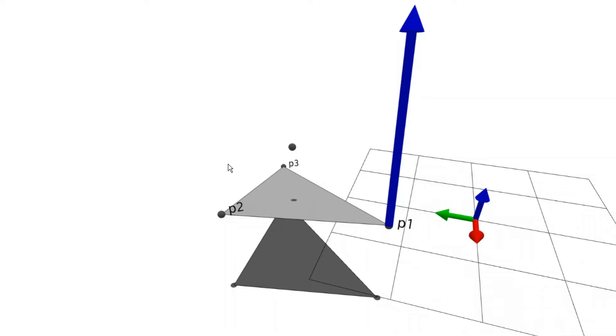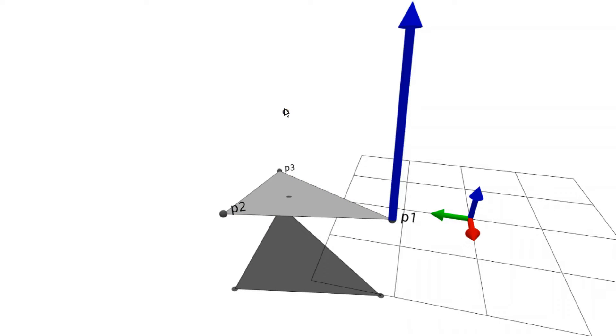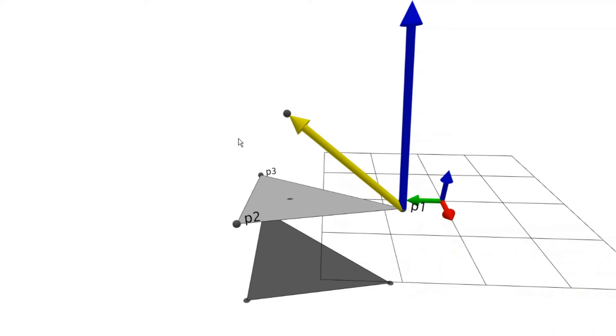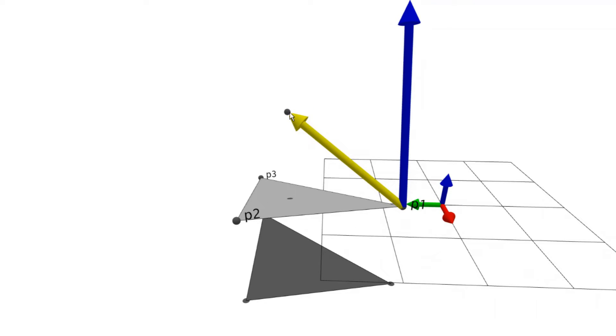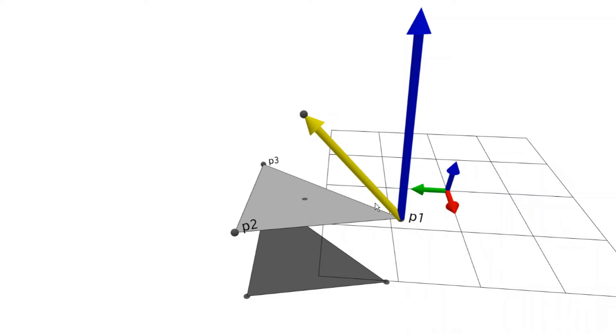Now that we have the normal vector, we want the normal component of the position vector so that we can add the negative value of the normal component to get the projected point on the plane. We project this vector onto the normal using the dot product.